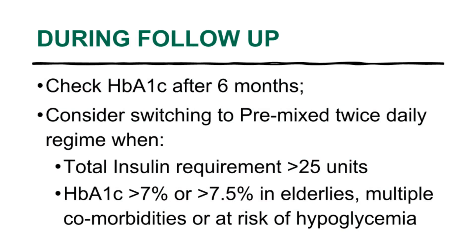If the HbA1c target is not within the desired range, assess the patient's compliance to therapy, check their insulin injection technique, and ask about hypoglycemia symptoms — especially in elderly patients and those with multiple comorbidities. If the target is still persistently not achieved, or the total insulin dose requirement exceeds 25 units, consider switching to a twice-daily biphasic insulin therapy.